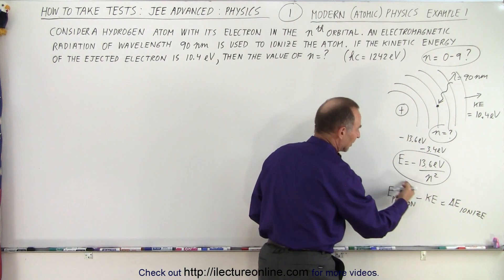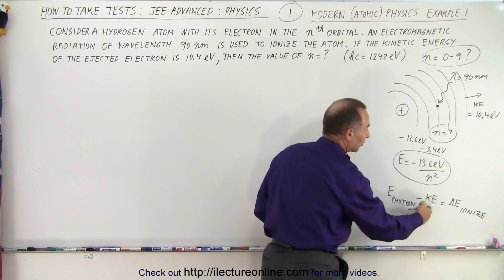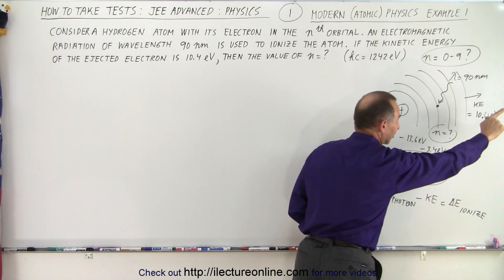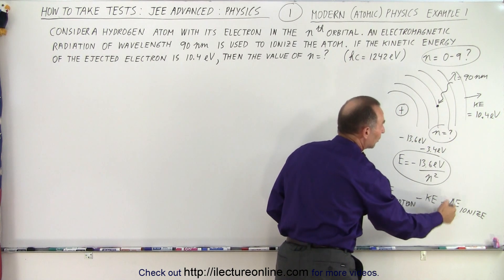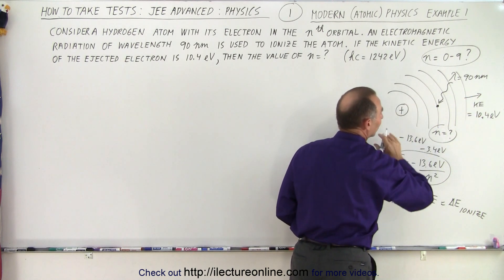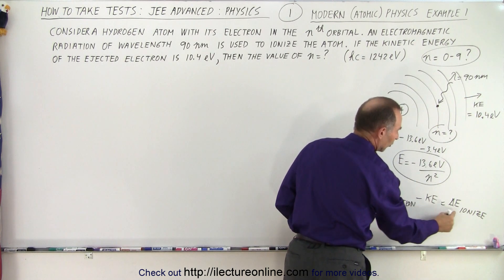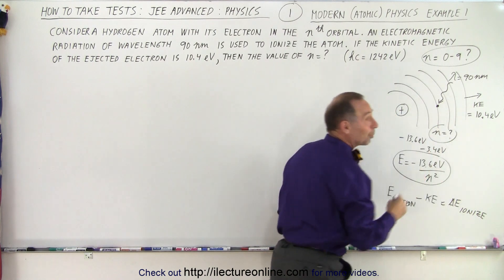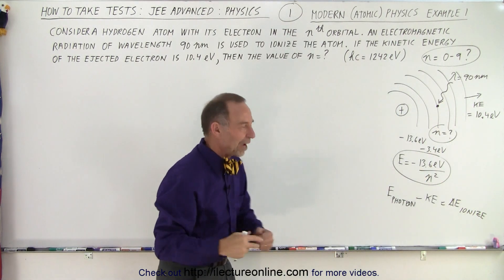So that's what we're going to do. We're going to find the energy of the photon, subtract from that the kinetic energy that the electron has as it's ejected out of the atom, and the difference will be the amount of energy needed to ionize the atom from the orbit that it's in. Then the smaller this number, the higher the orbit will be in which it's in. So that's the strategy.